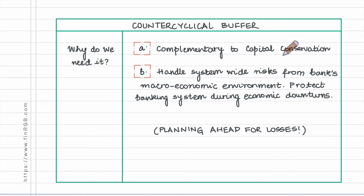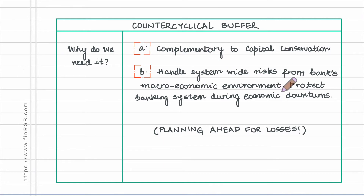If the capital conservation buffer focused on individual banks and tried to reduce the likelihood that any individual bank's capital ratios fall below the regulator specified minimums, when it comes to the counter cyclical buffer the focus is broader — the focus is on system-wide risks.